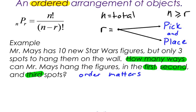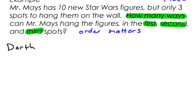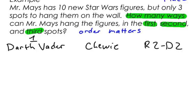For example, let's say I had Darth Vader, Chewbacca, and R2-D2. Those are the three figures. Well, this order in the first spot, second spot, and third spot would be different than Chewbacca, Darth Vader, and then R2-D2. Those two are different arrangements. The order matters.